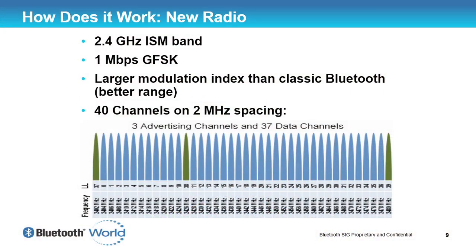We split the ISM band into 40 channels by using a 2 megahertz channel spacing. The first channel is at 2.402 megahertz and the last channel is at 2.480 megahertz. We've defined two basic types of channels: an advertising channel and a data channel.